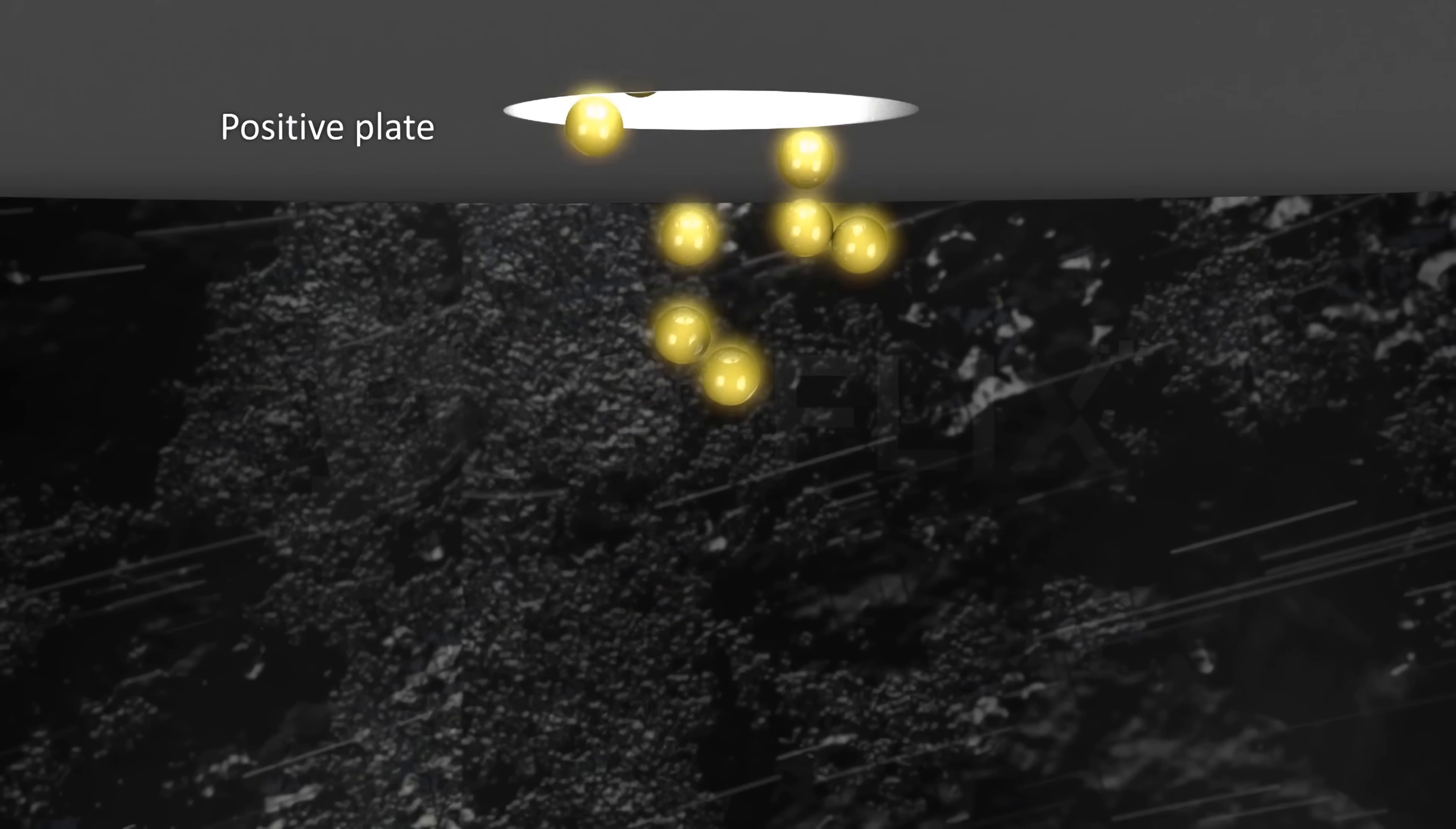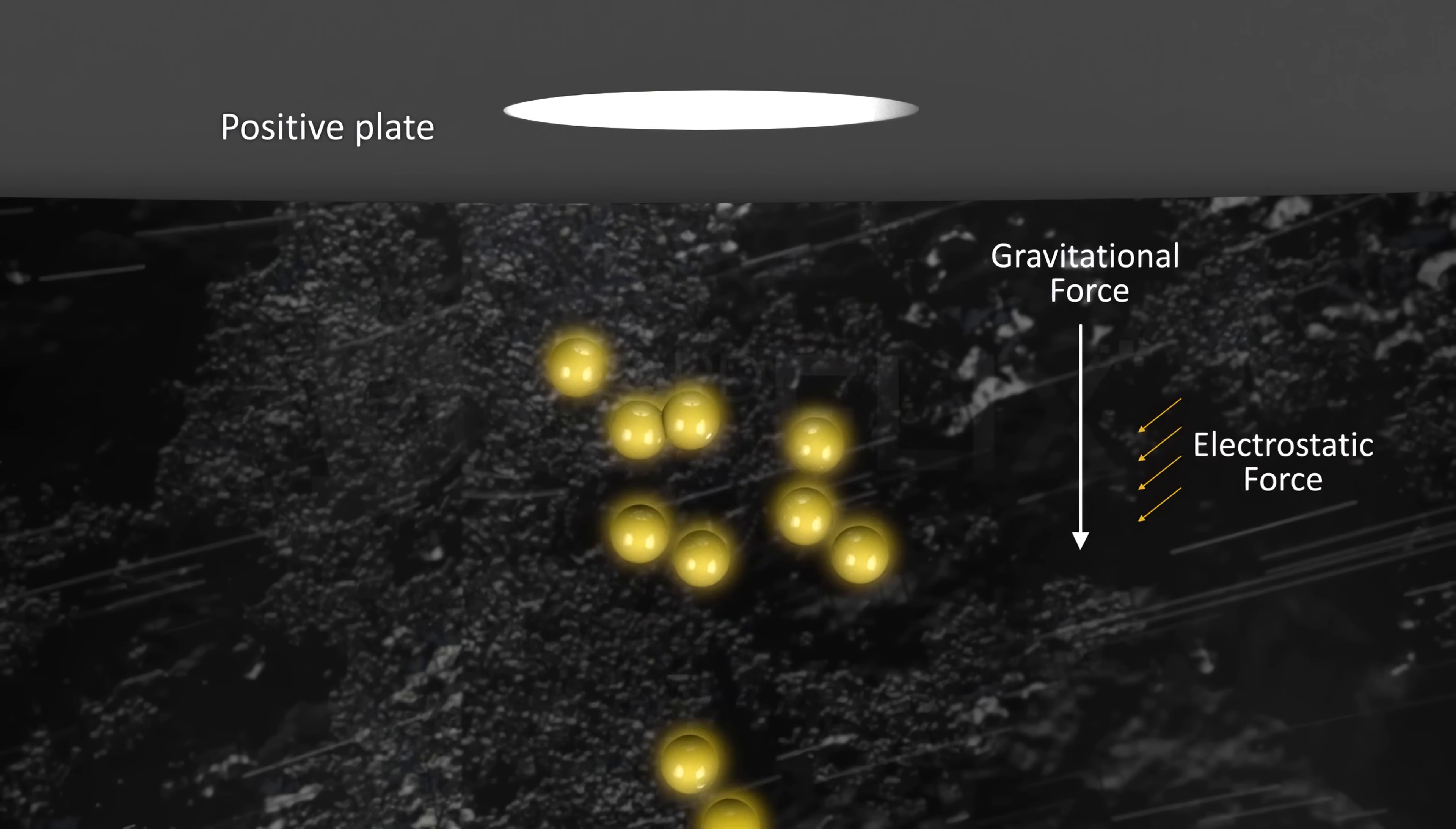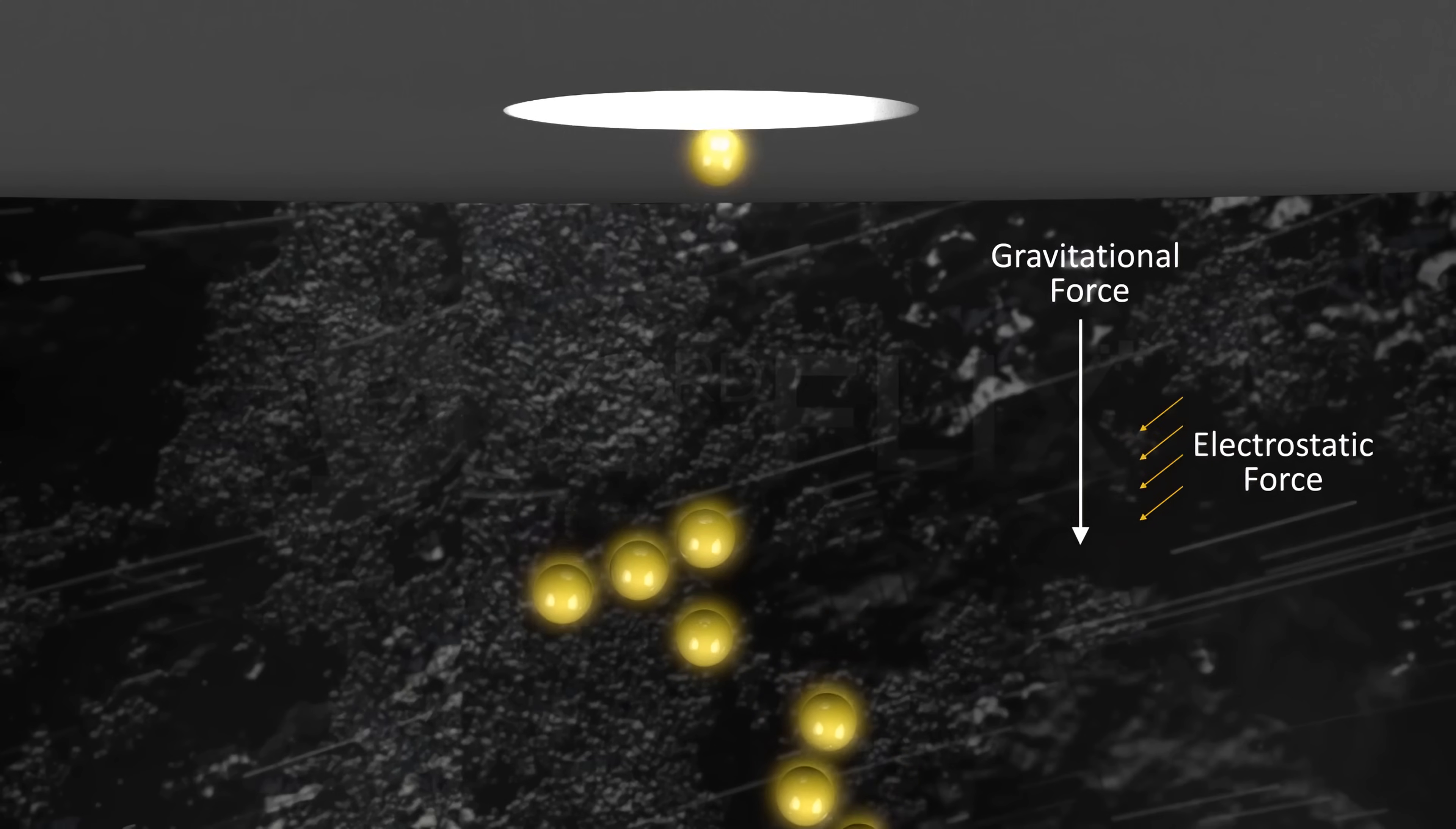Millikan then varied the voltage to strike a balance between the gravitational and electrostatic forces, and at a particular point, succeeded in arresting the movement of the oil droplets, resulting in their suspension.